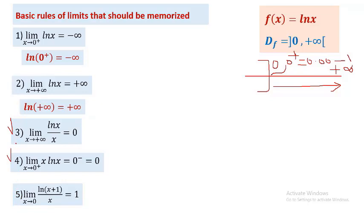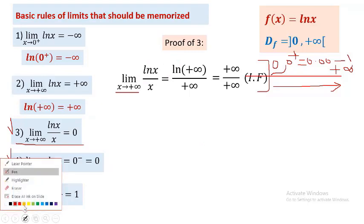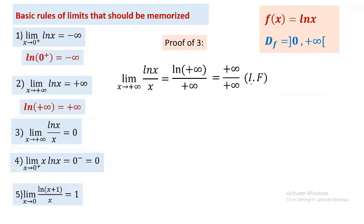Now I will prove property number 3. When evaluating the limit, first try direct substitution. As x goes to +∞, substitute x by +∞: we get ln(+∞) over +∞, which equals +∞ over +∞ — an indeterminate form.